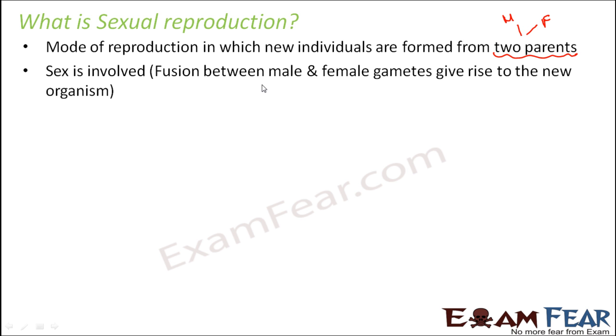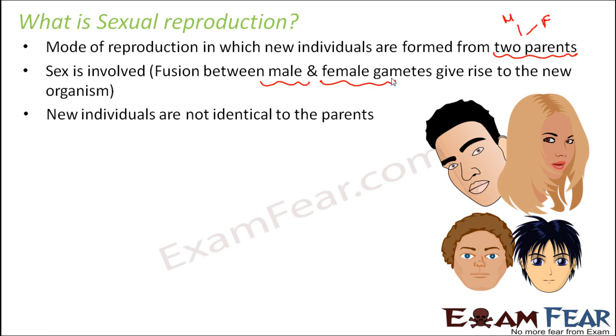You need male sex cells, you need female sex cells — that is the specialized cells which can actually fuse with the counterpart cell and give rise to a new organism. So this is what happens in sexual reproduction.